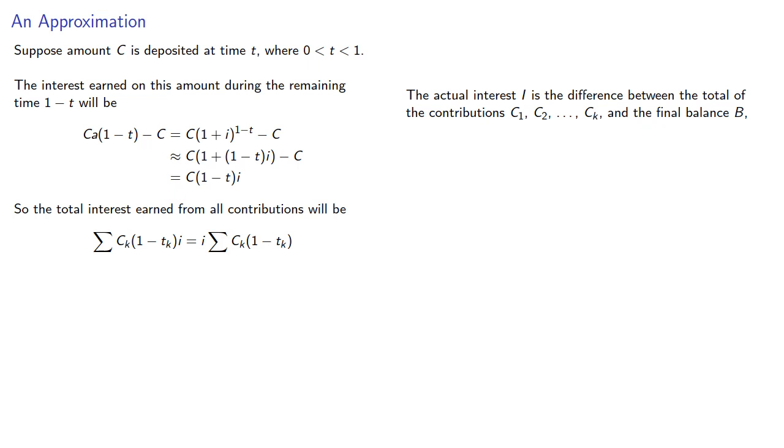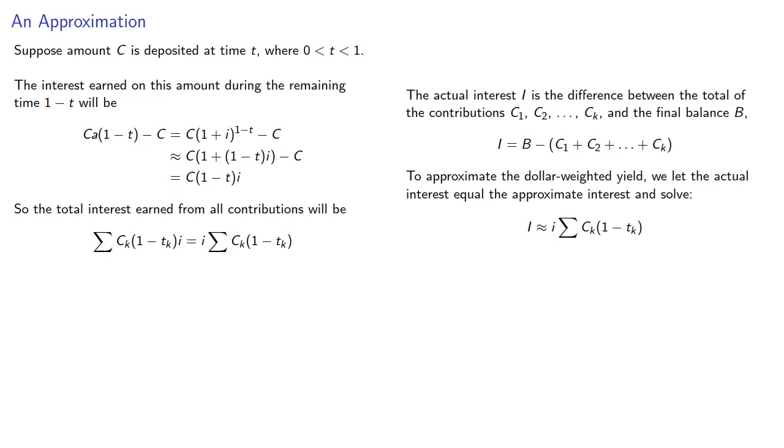The actual interest, i, is the difference between the total of the contributions c1 through ck and the final balance, b. In other words... To approximate the dollar-weighted yield, we let the actual interest equal the approximate interest and solve. And so if i is the total interest, then the approximate dollar-weighted yield rate will be...